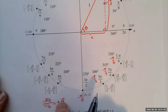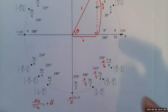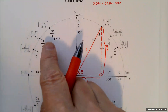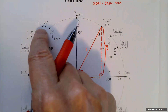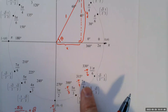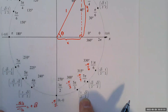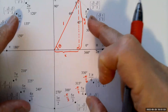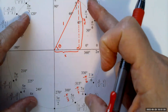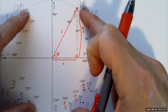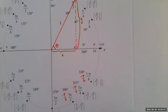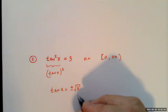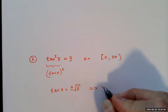Tangent equals √3 at π/3 and 4π/3. Tangent equals negative √3 at 2π/3 — positive y divided by negative x — and at 5π/3. So all the π/3 family fractions — π/3, 2π/3, 4π/3, and 5π/3 — are solutions on the interval from 0 to 2π.